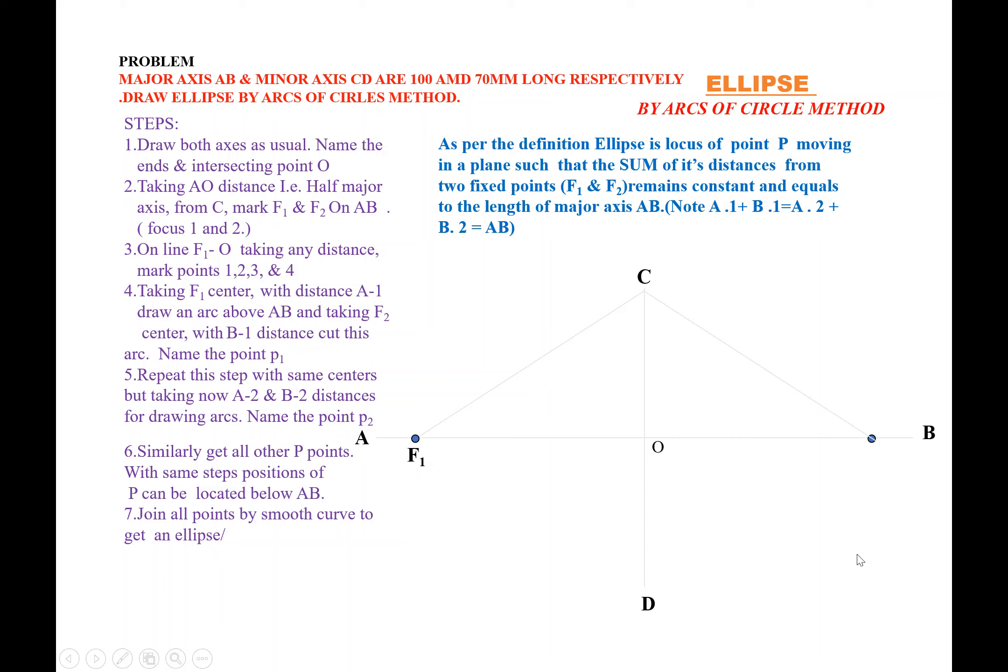This is F1 and F2, the focus points. Sometimes F1, F2 distance we can find out. If we find out the distance, CF1 is the distance.